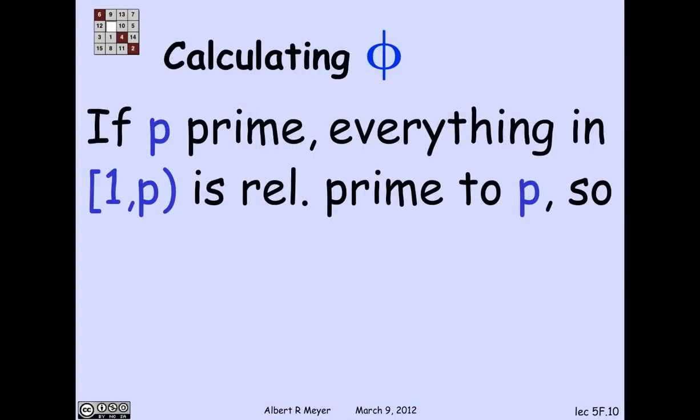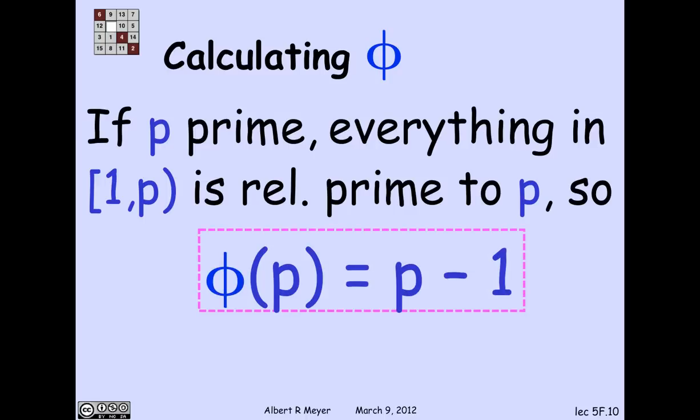A simple rule for calculating phi when n is prime, we've already indicated. Namely, everything, every positive number less than p is relatively prime to p. And so phi of p is simply p minus 1.